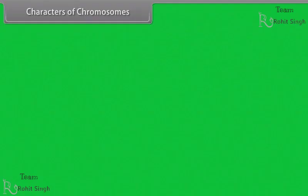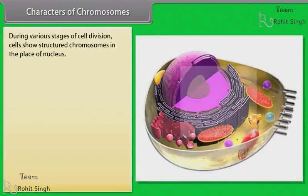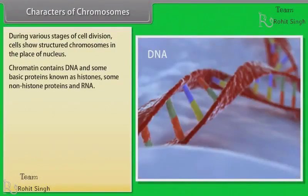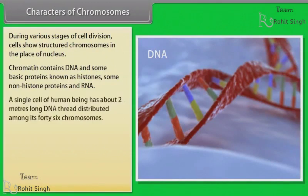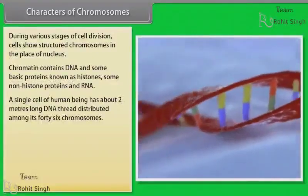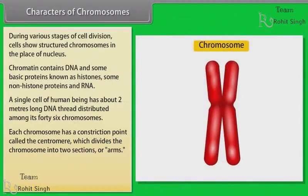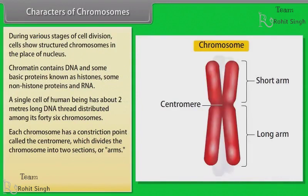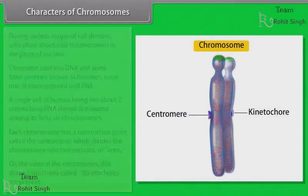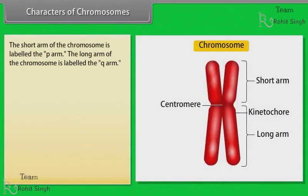Characters of chromosomes. During various stages of cell division, cells show structured chromosomes in place of the nucleus. Chromatin contains DNA and some basic proteins known as histones, some non-histone proteins, and RNA. A single cell of a human being has about 2 meters of DNA thread distributed among its 46 chromosomes. Each chromosome has a constriction point called the centromere, which divides the chromosome into two sections or arms. On the sides of the centromere, disc-shaped structures called kinetochores are present.